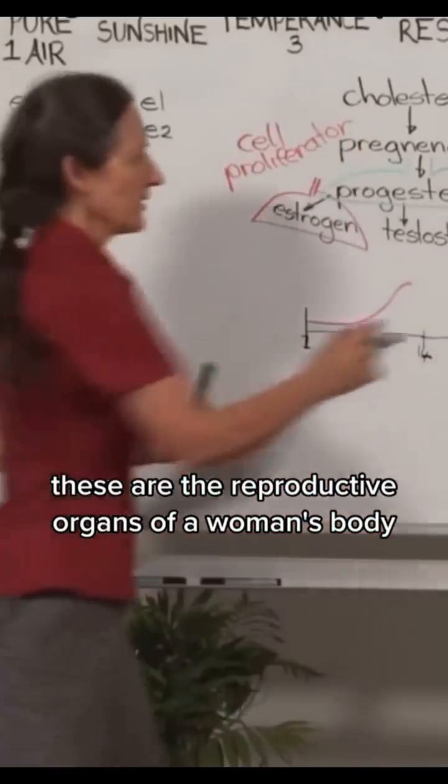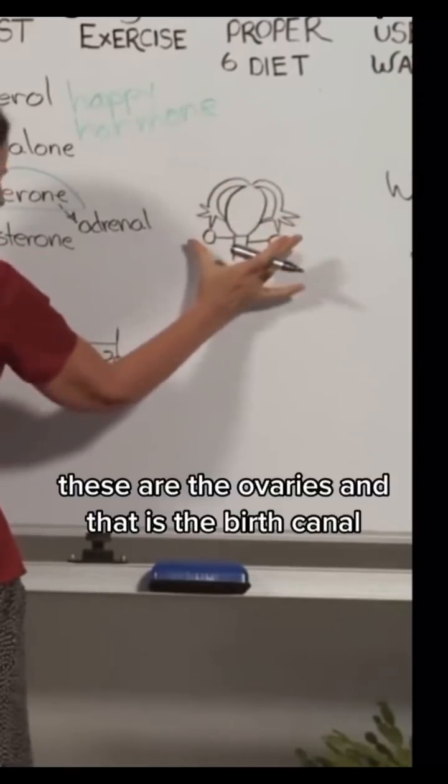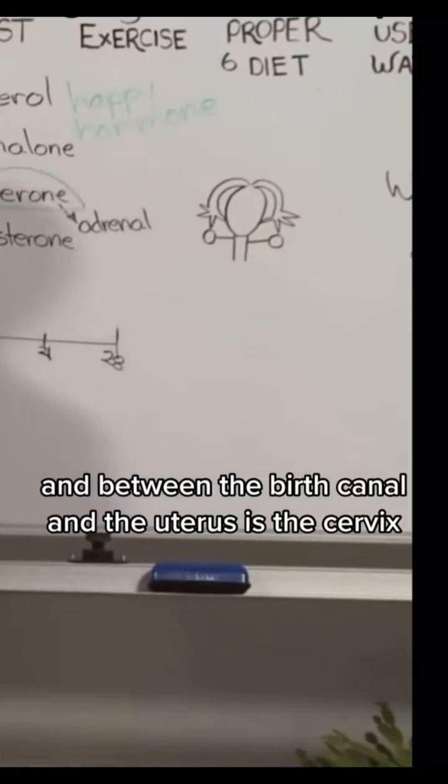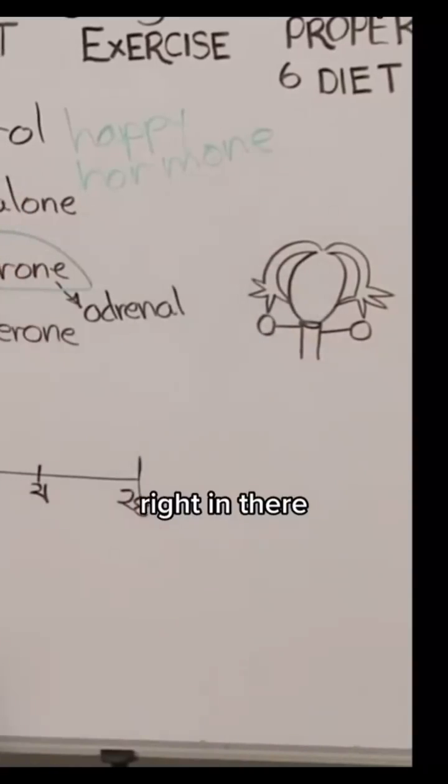These are the reproductive organs of a woman's body. This is her uterus. These are her fallopian tubes. These are the ovaries and that is the birth canal. And between the birth canal and the uterus is the cervix, right in there.